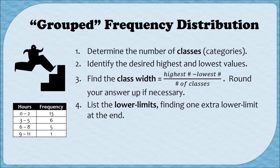Step 4 is to list the lower limits. The lower limits of each class are those first values — so in this example, our lower limits are 0, 3, 6, and 9. When we go to create our frequency distribution, we're going to need to find one extra lower limit, and the reason for that will become clearer when we do the example.